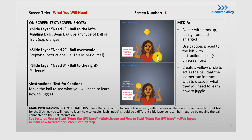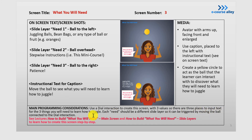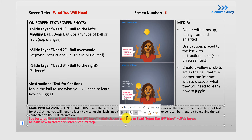The avatar is placed in the center with her arms up and the caption, and a yellow circle will represent a ball that she throws from one hand to the other. The main programming consideration is that we're going to use a dial interaction to create the screen with three values — three places to input text for the three things you will need to learn how to juggle. Each need will be on its own slide layer, triggered by moving the ball connected to the dial interaction. This video is just about how to build the main screen.